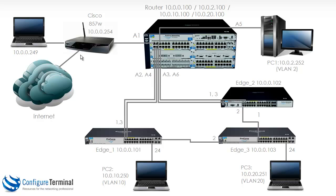When traffic returns, it's NATted back to the internal IP address and sent to the HP router on VLAN 1. InterVLAN routing takes place on the router, the frame is sent as a tagged frame on VLAN 10 to edge 1, which strips the tag and sends it as a normal Ethernet frame to PC2. We have successfully built this network with interVLAN routing, network address translation, and static routing.